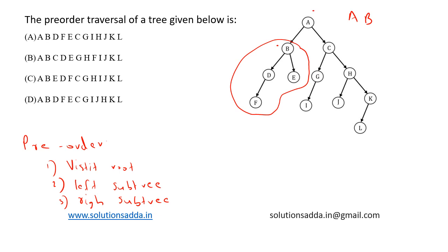Then we will go to this subtree because this is the left subtree. This happens recursively. We print D and F. Now this is over, we return back, then we print E.